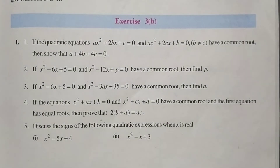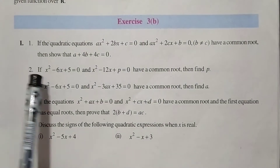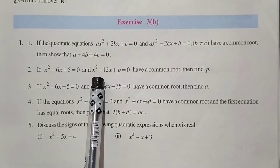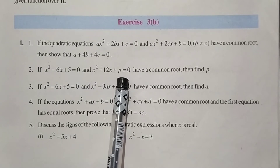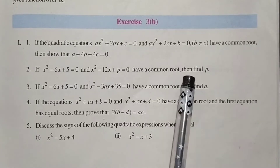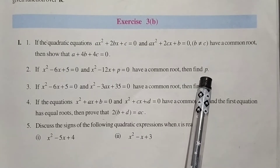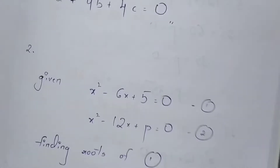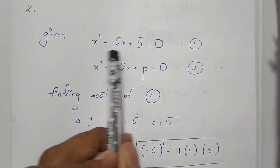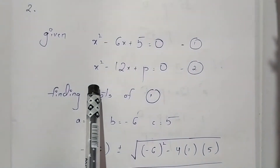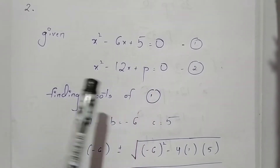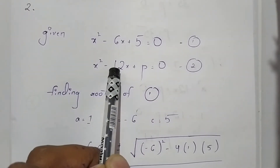Hello guys, in this video we will solve this question: if x squared minus 6x plus b equals zero and x squared minus 12x plus b equals zero have a common root, then we need to find the value of b. These two are the given equations.